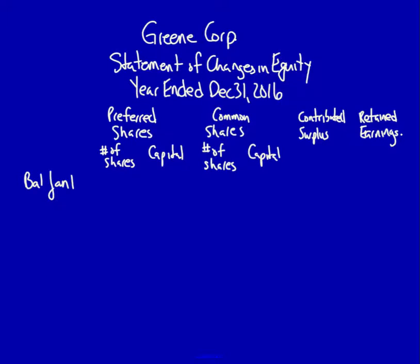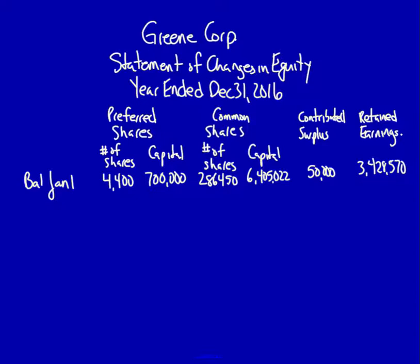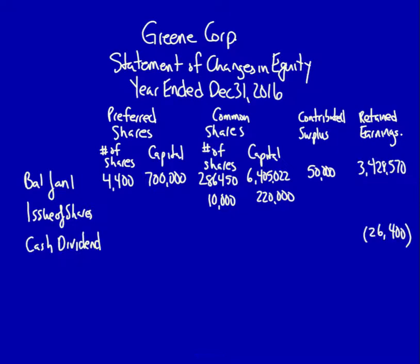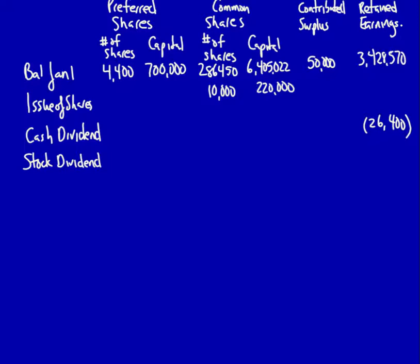We always start with opening balances, which are taken directly from the T-accounts. Then we record all the business transactions that affected equity. We had the issue of shares, which increased common shares. Next we had a cash dividend — cash dividends go under retained earnings. We also had a stock dividend. The stock dividend increased common shares and decreased retained earnings. All this information is taken from the T-accounts.